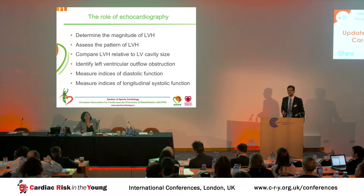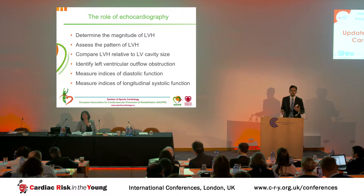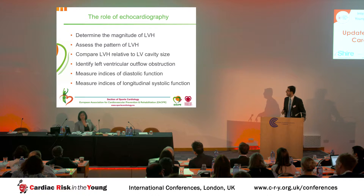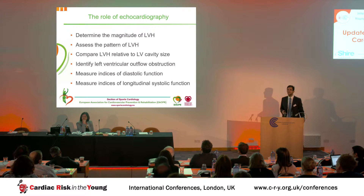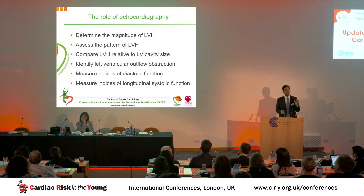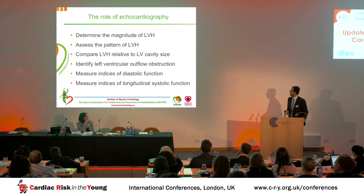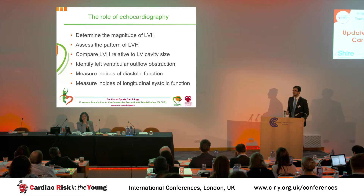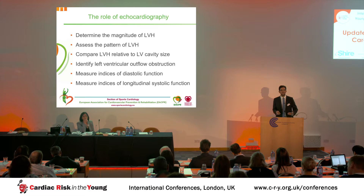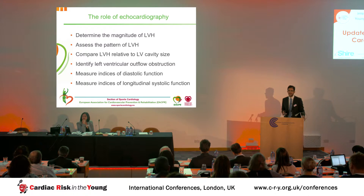Regarding the role of transthoracic echocardiography: I won't go through all the features because if it's an obvious case everyone will recognize it. The things we need to determine are the magnitude and the pattern of left ventricular hypertrophy — in athletic individuals this should always be symmetric, maybe with a difference of about 2 millimeters, but that should be it. We also need to compare the degree of hypertrophy with the left ventricular cavity size to ensure the LVH is not at the expense of cavity size.